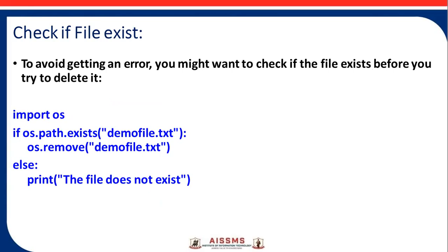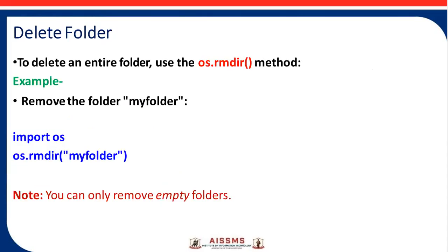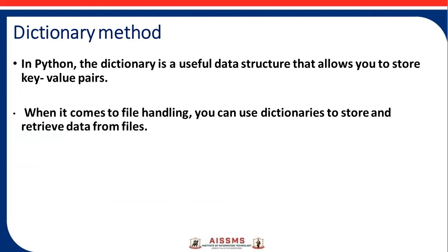To check if a file exists and avoid getting an error, you might want to check if the file exists before you try to delete it. To delete an entire folder, use the os.rmdir() method — for example, os.rmdir('myfolder'). Note that you can only remove empty folders.